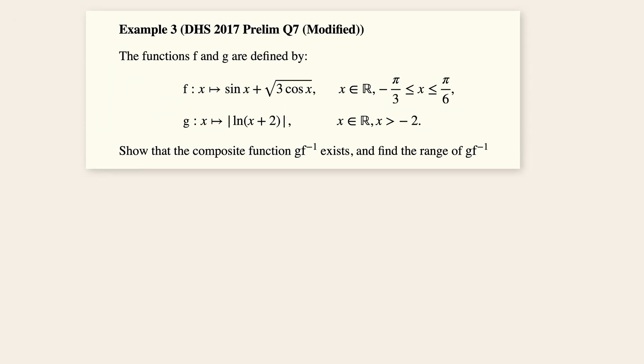Where we now need to prove that a composite function G F inverse exists. So bring up the condition again, for this to exist, the range of F inverse must be a subset of the domain of G. Before you jump into sketching the graph of F inverse to get its range. Now do recall that the range of F inverse is equals to the domain of F. So very quickly, the range of F inverse is from negative pi over three to pi over six inclusive.